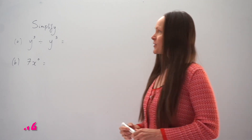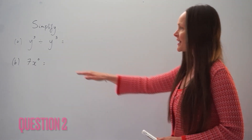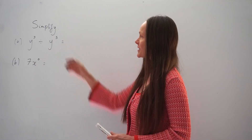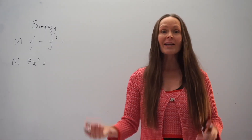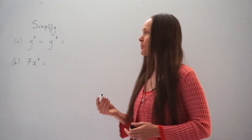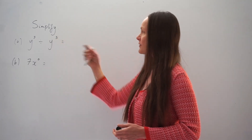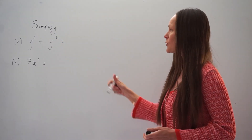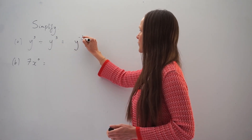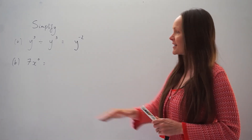In the next question, again we have to simplify, and in part A it says y cubed divided by y to the power of 5. Remember, when you're dividing, you must subtract the powers. So 3 take away 5 is negative 2, so the answer is y to the power of negative 2.